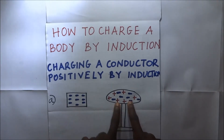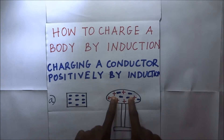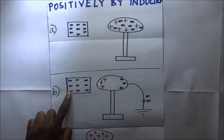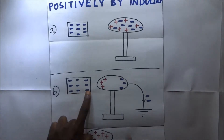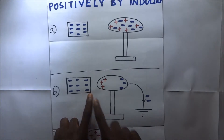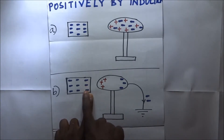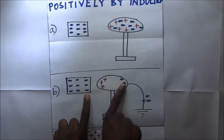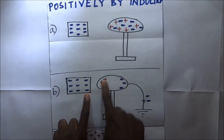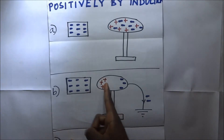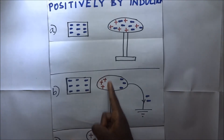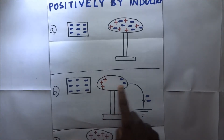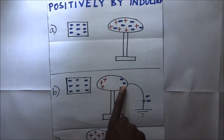We take a negatively charged body and place it near the neutral conductor. When a negatively charged body is brought near the conductor, being negatively charged, it will repel the negative charges within the conductor.